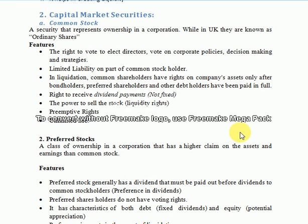Common stockholders are the owners of the company, so they have ownership rights on the assets of the company. They have a claim on the assets of the company. In the event of bankruptcy, you receive a portion of the assets after paying the company's payables to preferred stockholders. At the time of bankruptcy, common stockholders have a residual claim right on the assets of the company.